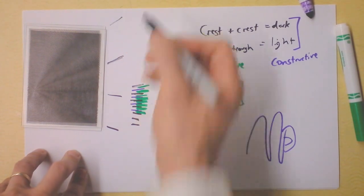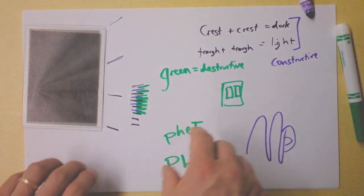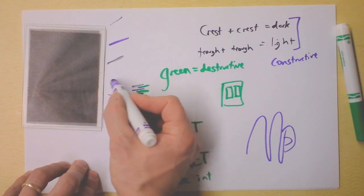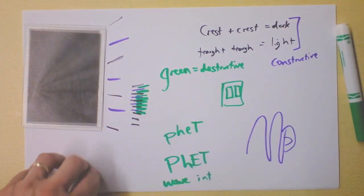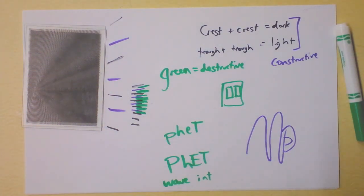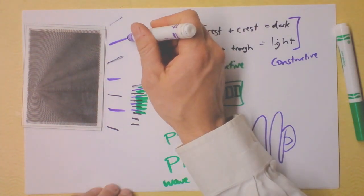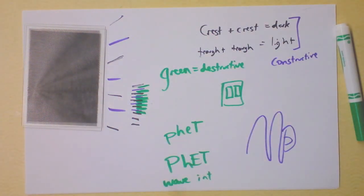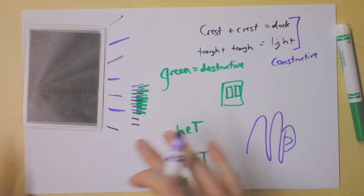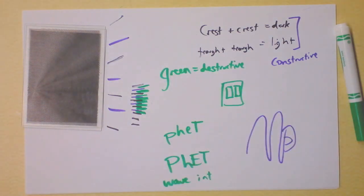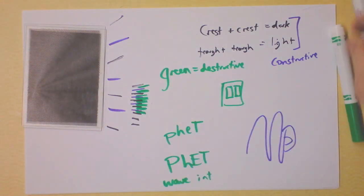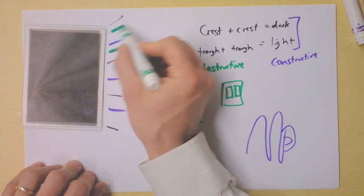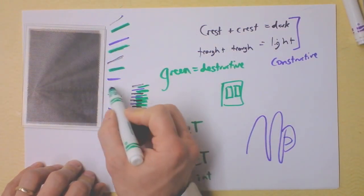That means we must have light lines right in between them - here, here, and here - and those are always constructive: trough-trough or crest-crest. They only differ by a moment in time, because the trough-trough is going to turn into crest-crest a moment later and vice versa. But in between them there's a gray region, and those happen equally often, spaced exactly in between.